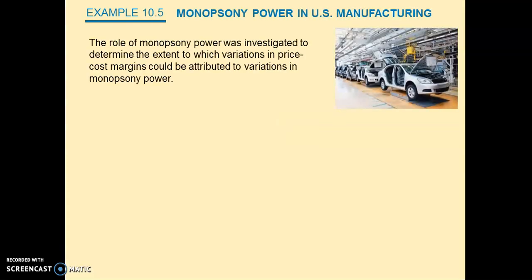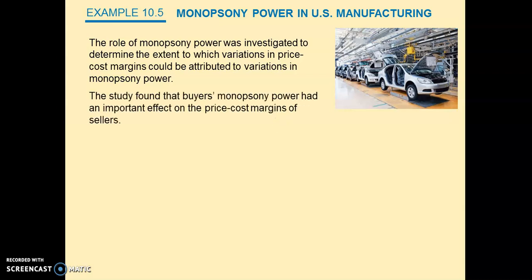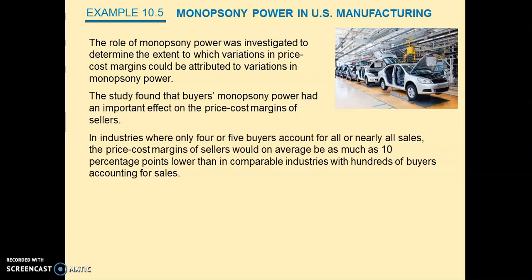There is an example of monopsony power in the U.S. manufacturing sector — example 10.5 — which you can read through for your knowledge enrichment. That concludes chapter 10. We only have one more chapter to go, which is chapter 11. We only cover sections 11.1 and 11.2 in that chapter, and then that concludes your microeconomics for second year.